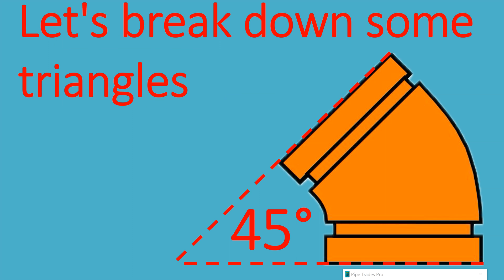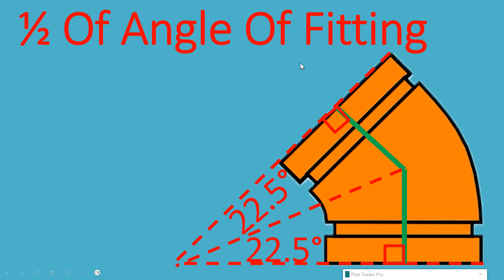So let's break down some triangles in this 45-degree fitting. The whole fitting is 45 degrees. As you can see, half the angle of fitting in this case is 22.5. So if you come off the face perpendicular one way and perpendicular the other way, they're going to bisect in the middle, cutting this fitting into two 22.5-degree triangles.